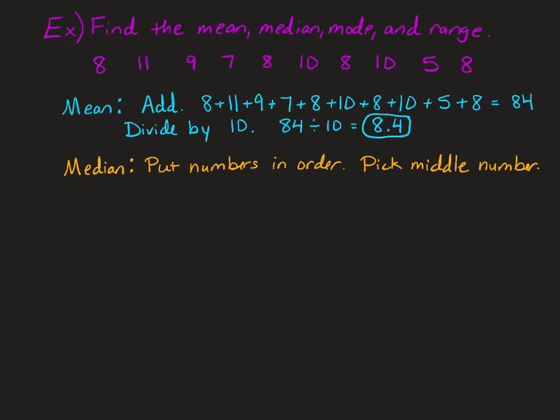Now to find the median, we're going to put our numbers in order, and then pick the middle number. I'm going to look at this list and start with finding the smallest number, which is 5. I'm going to cross it off and write it down. My next smallest numbers are 7, then 8. I have several 8's, and every time I cross them off, I'll write it down.